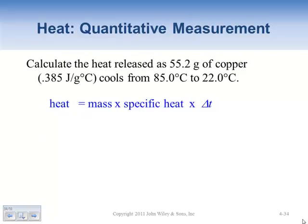Let's calculate the heat released as 55 grams of copper with specific heat 0.385 J/g°C cools from 85 degrees Celsius to 22 degrees Celsius. If you put a hot piece of copper in water, this tells you how much heat will be absorbed by that water. Different metals release different amounts of heat, and here we can calculate how much heat comes off.